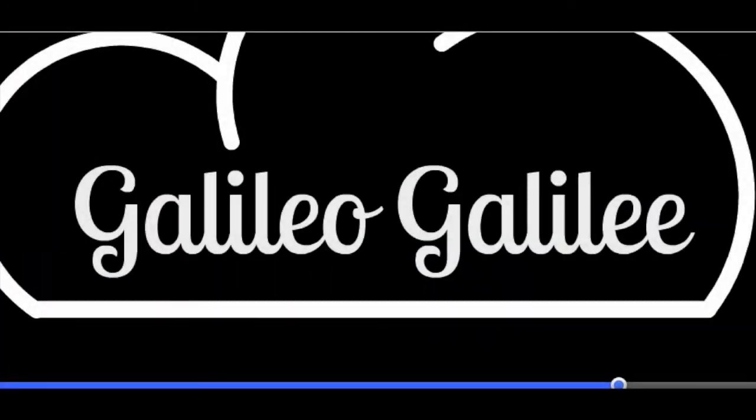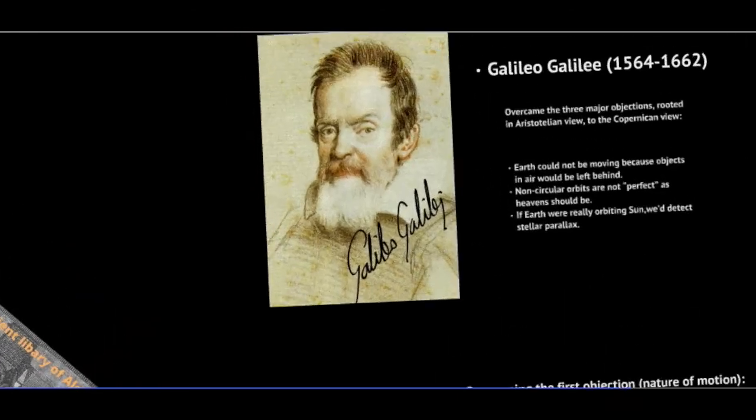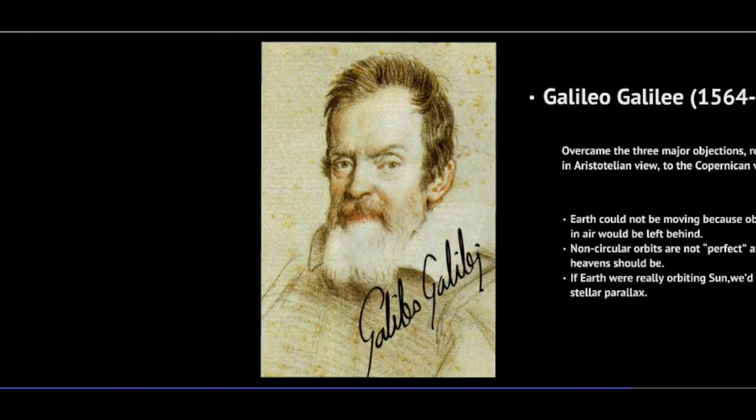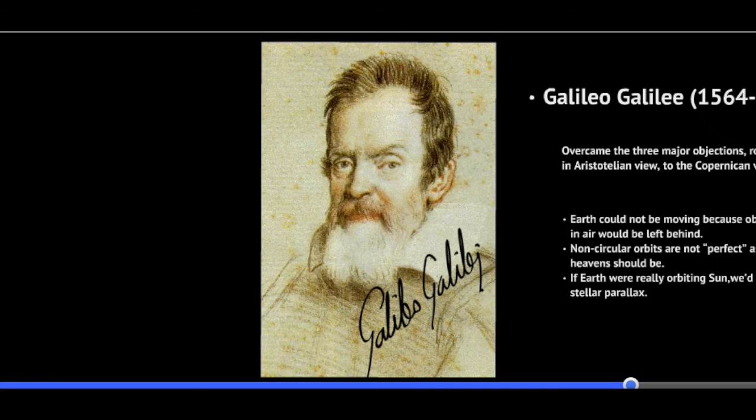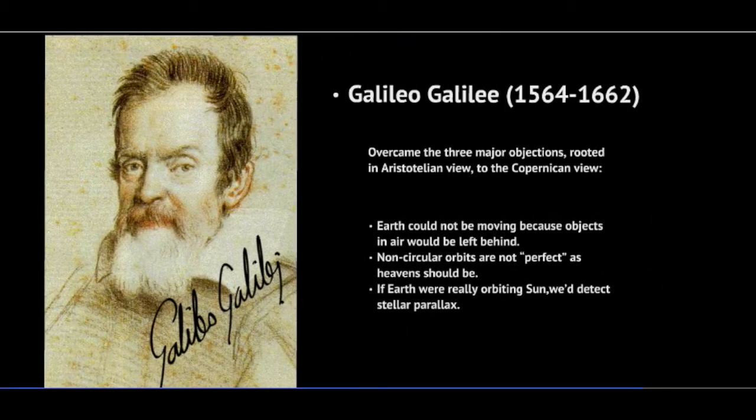There were still objections to Kepler's laws, and a fellow named Galileo Galilei came along and removed many of those objections. Galileo is considered the father of modern science. He was the first one to start truly applying the scientific method of developing a hypothesis, experimenting, comparing his results to the hypotheses, developing new hypotheses. The three objections to Kepler's laws were that the Earth could not be moving because objects in the air, like the clouds and the birds, would be left behind as the Earth moved away from them. Their non-circular orbits were not perfect, and the heavens should be perfect. Those were both remnants of the Aristotelian view and of the Church at the time. And if the Earth were really orbiting the Sun, we should detect stellar parallax, which we had not been able to detect.